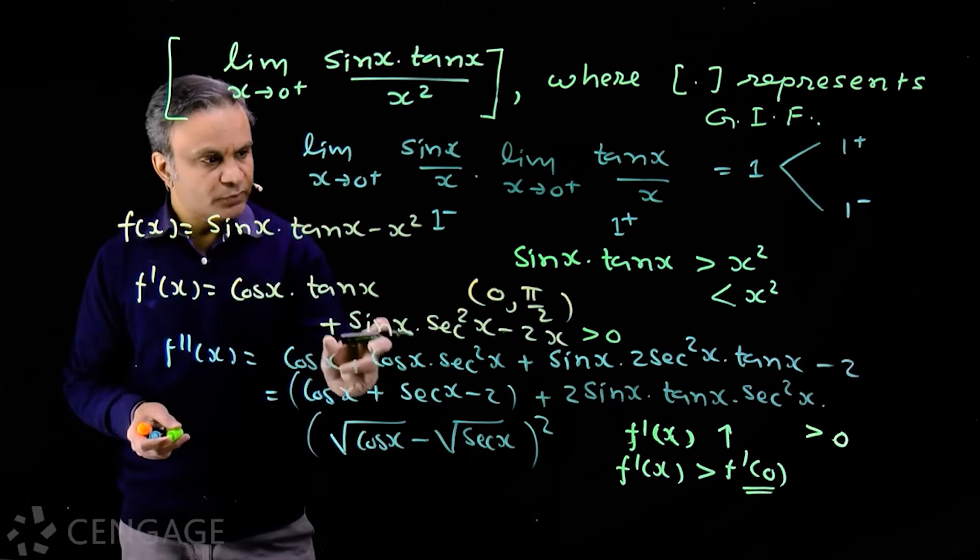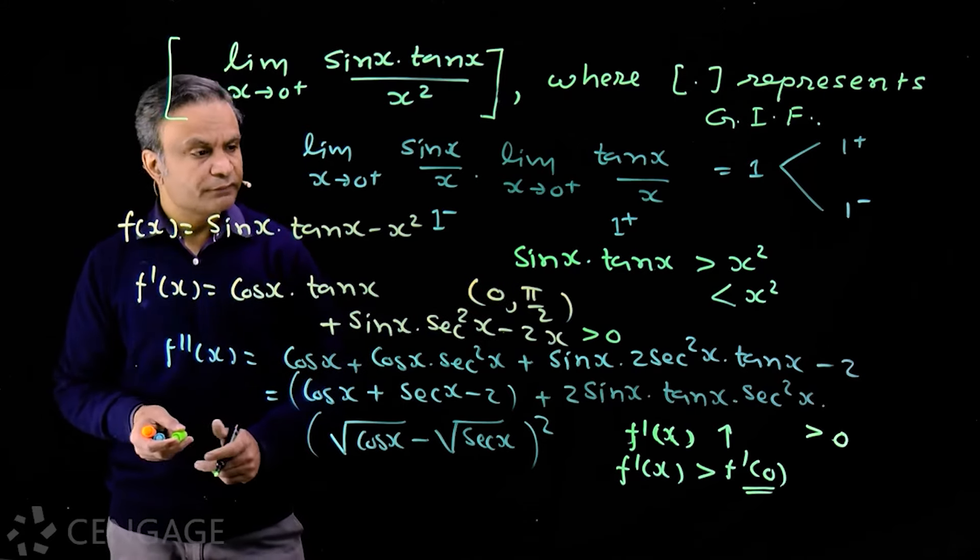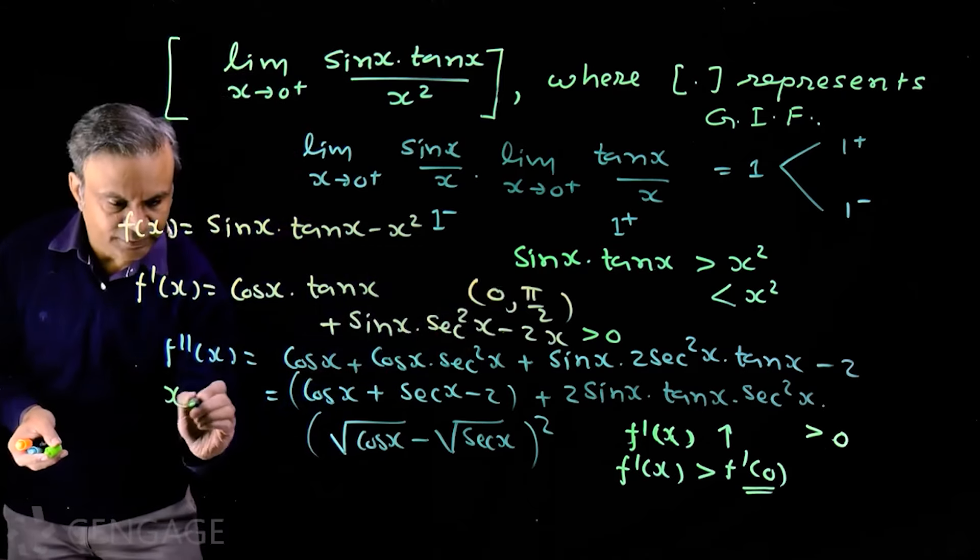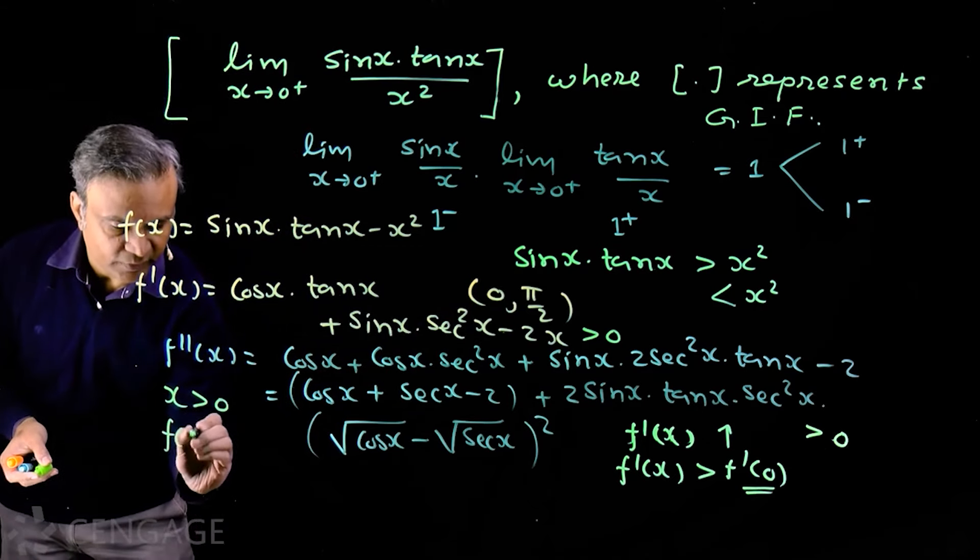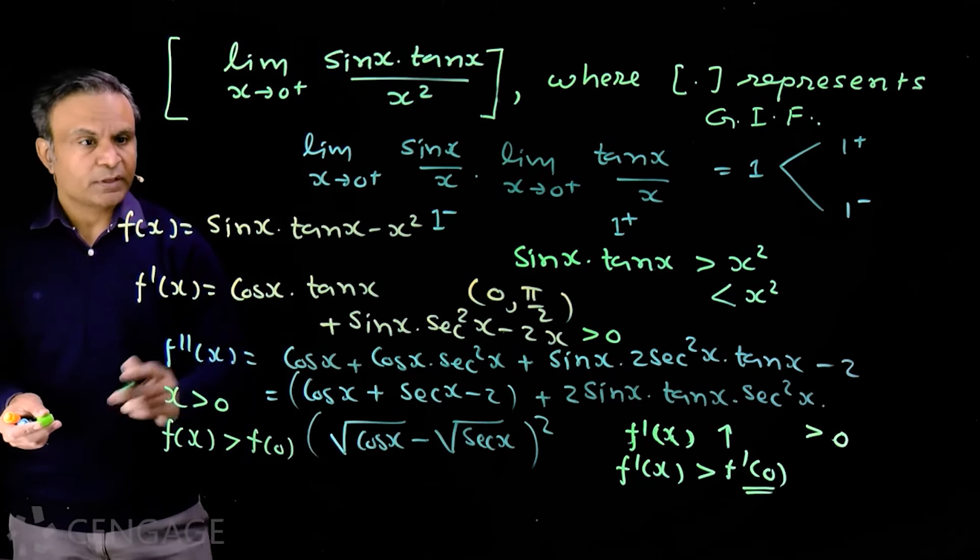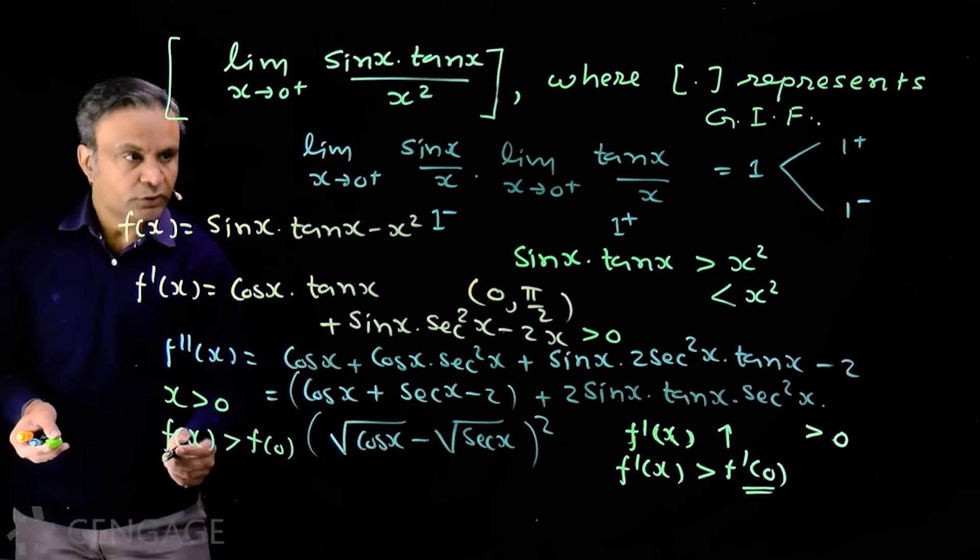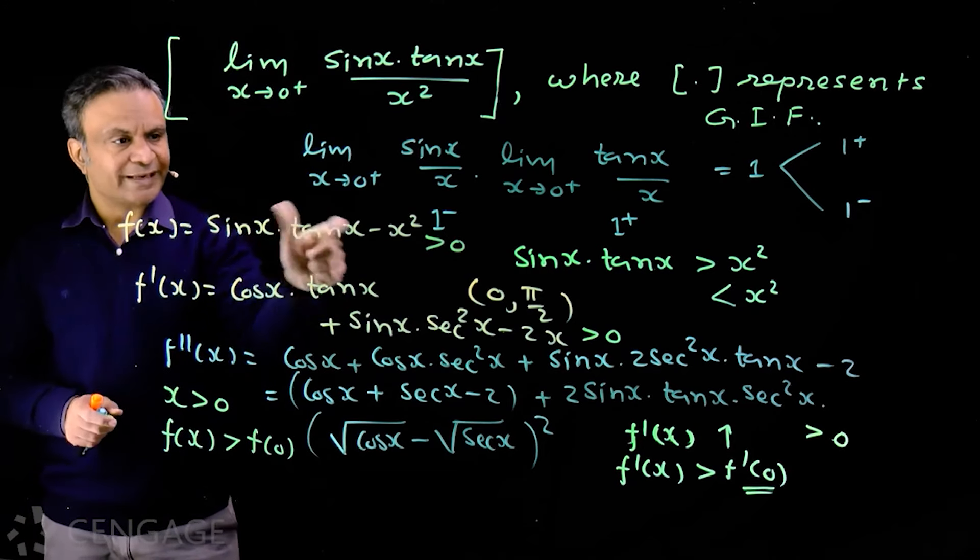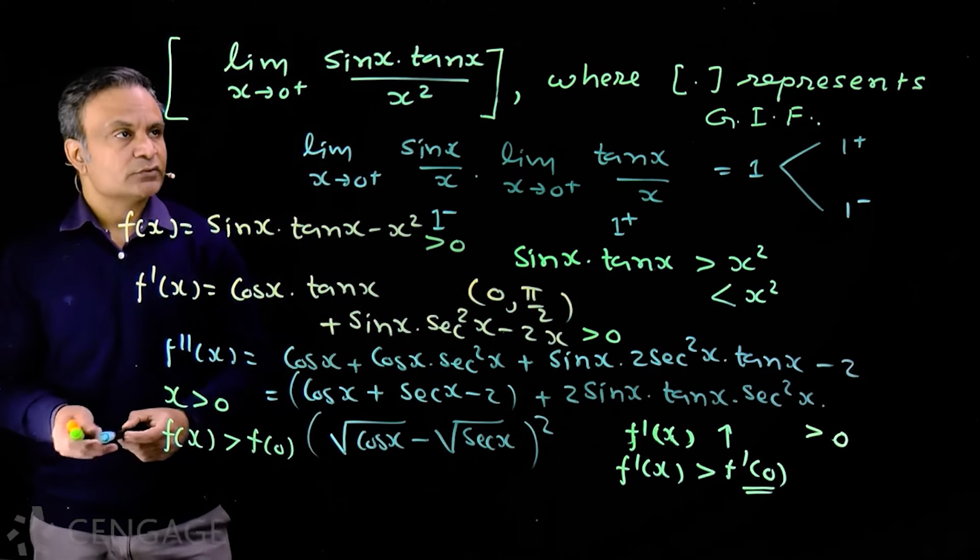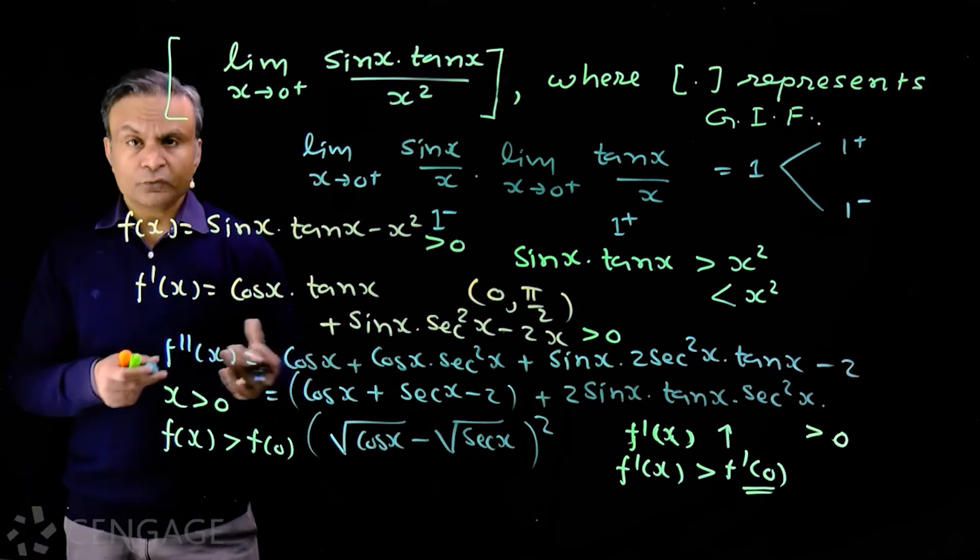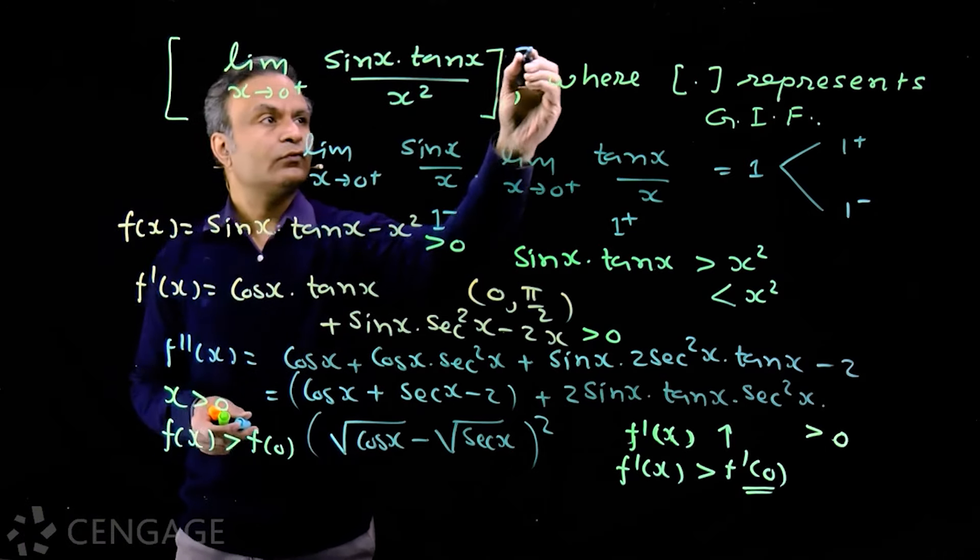Now f prime x is positive in this interval. That means the function f(x) increases in this interval. So for x greater than 0, we have f of x greater than f of 0. Now f of 0 is 0, so we find this is greater than 0. So we have sin x tan x greater than x square. So sin x tan x upon x square is greater than 1, so this value will be 1, not 0.